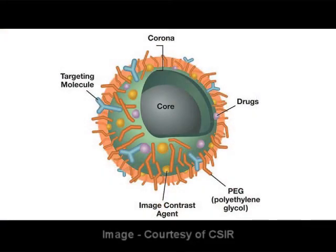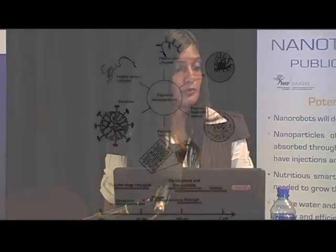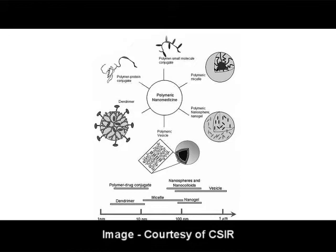Polymeric drug delivery systems consist of polymer particles — reservoir devices where the active is encapsulated within the polymer shell — and matrix devices where the active is physically entrapped within the polymer network. You also get dendrimers, polymer micelles, and polymer-drug conjugates. Different activities within drug delivery require different sizes, and we focus on nanospheres because we want a size range of about 500 nanometers.